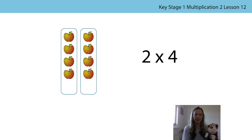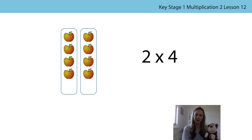Let's have a look at this picture and this multiplication expression. What can you see in the picture? Bunga says that he can see two fours. Do you agree with him? Let's have a look — we've got one four, two fours. And we can represent that with a multiplication expression: two times four.